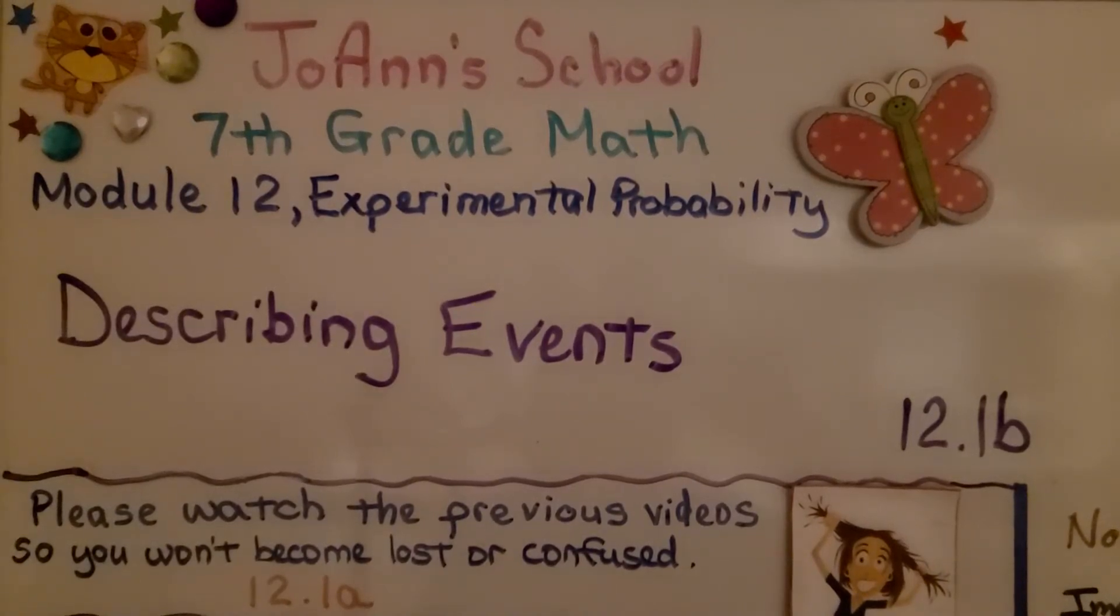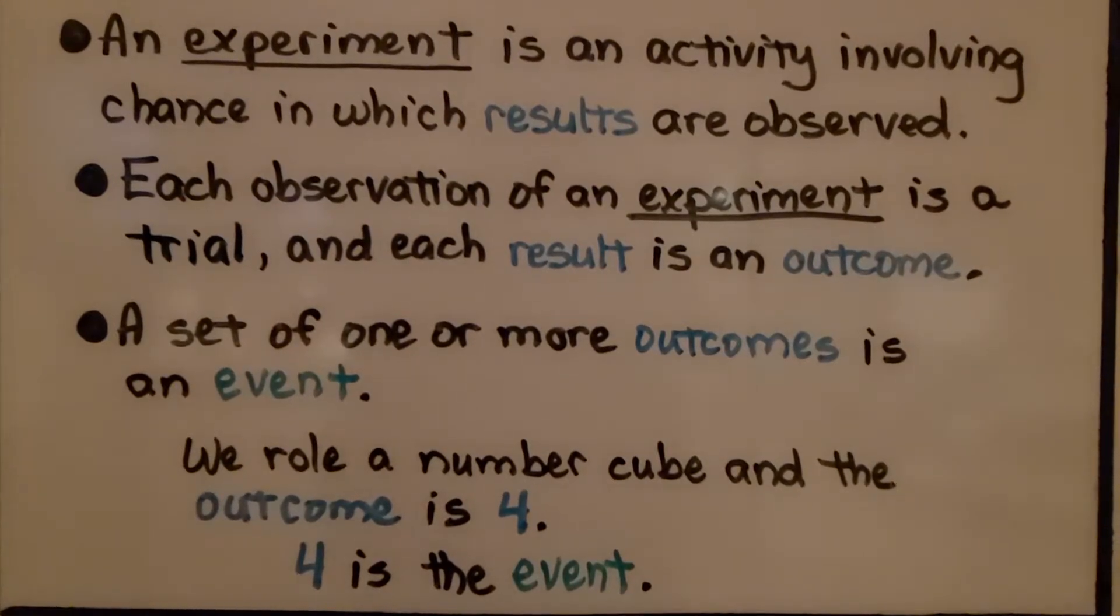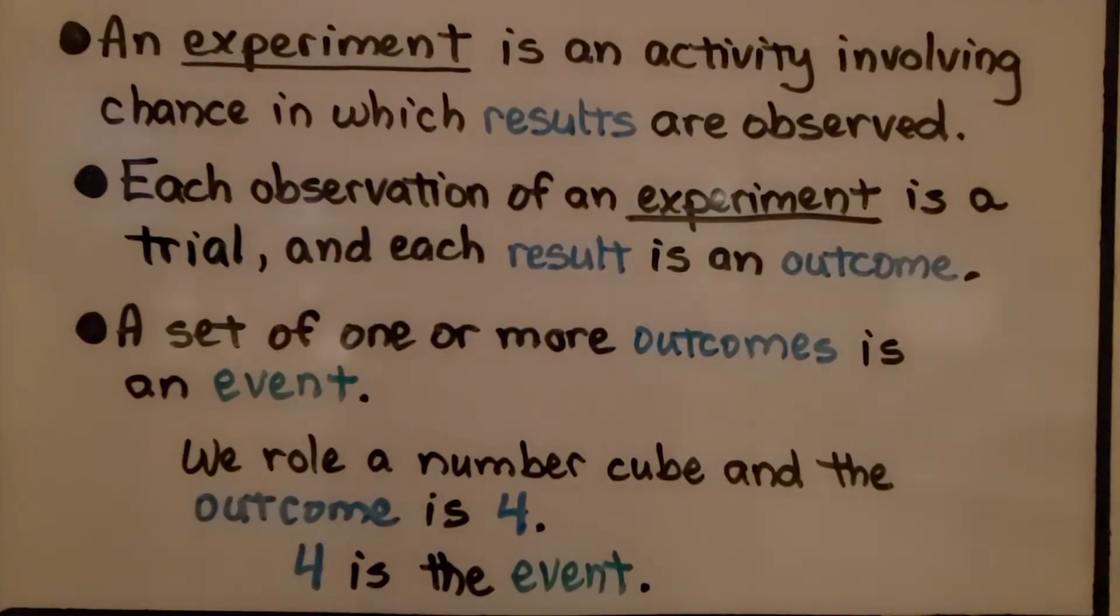Lesson 12.1b Describing Events. An experiment is an activity involving chance in which results are observed. Each observation of an experiment is a trial, and each result is an outcome. A set of one or more outcomes is an event. For example, we roll a number cube and the outcome is four. Four is the event.